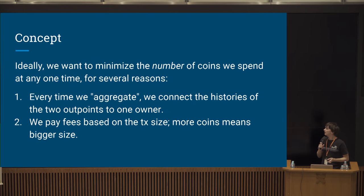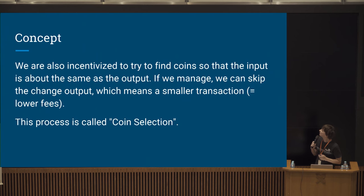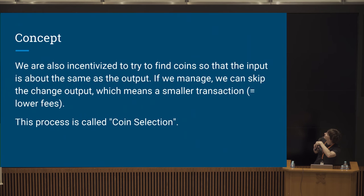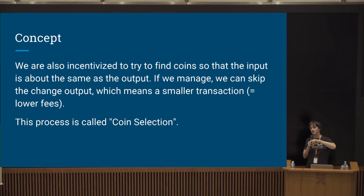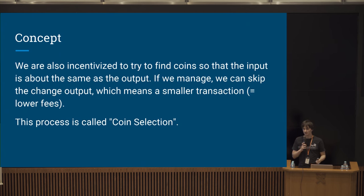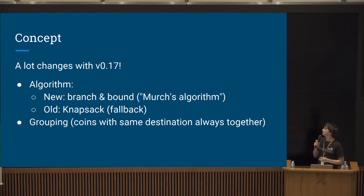There are several heuristics. One good heuristic is: if we can find enough coins to exactly cover the amount we're sending, we don't need to include a change output — like paying a $5 bill for a $5 purchase and getting nothing back. That means our transaction is smaller and cheaper. This whole process is called coin selection, and a lot changed with version 0.17.